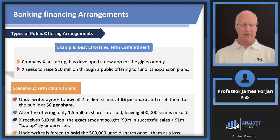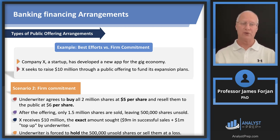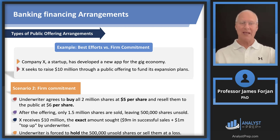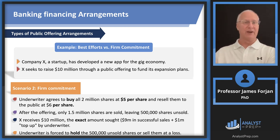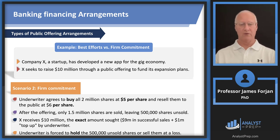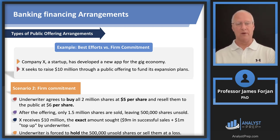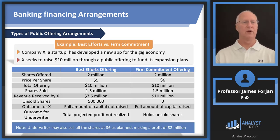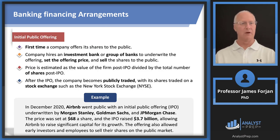Under a firm commitment, the underwriter buys 2 million shares at $5 and hopes to resell them to the public at $6 per share. If only 1.5 million are sold, company X is still happy — it receives its $10 million. But the underwriting firm is forced to hold onto those 500,000 unsold shares, either hoping prices rise to $6, $8, or $12, or potentially selling them at a loss if they fall to $3 or $1. There's a good summary table you can pause the video to review.